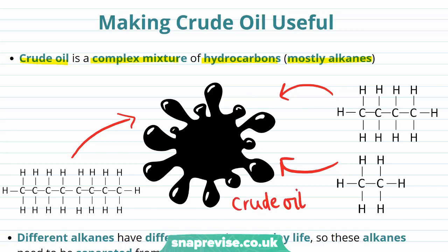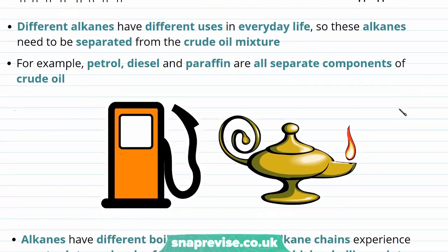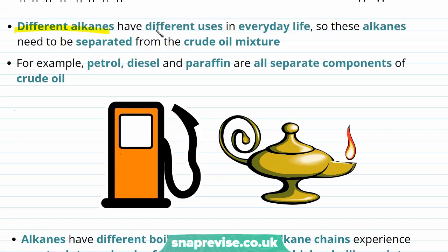The important point is that crude oil isn't just one type of molecule — it's a mixture. These different alkanes will have different properties and therefore different uses. We want to be able to separate these different alkanes out from the crude oil mixture, which is the natural form we get out of the ground. For example, petrol, diesel, and paraffin are all separate components of crude oil.